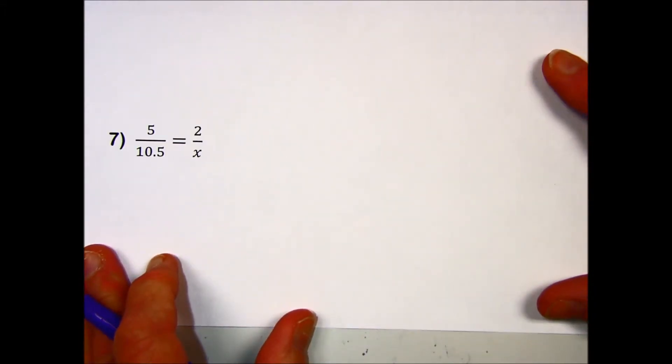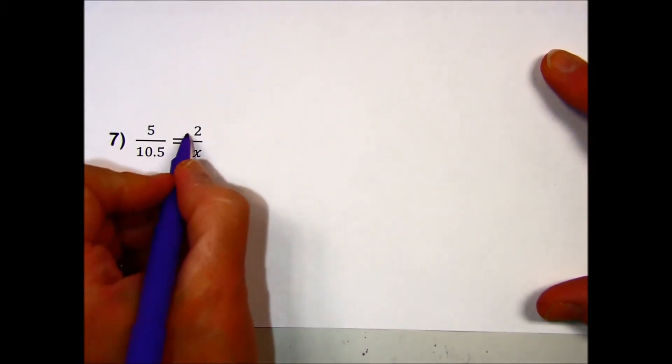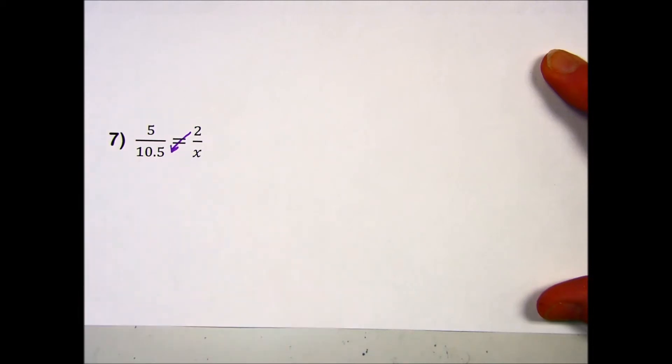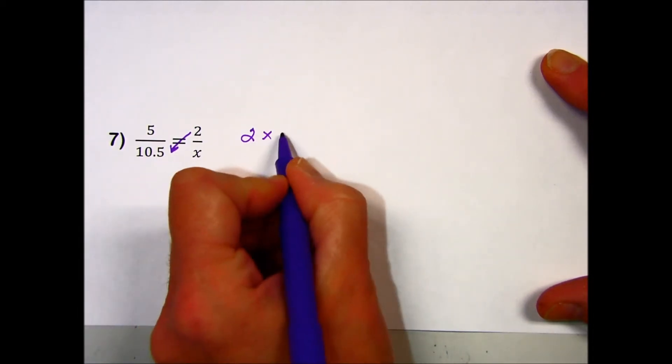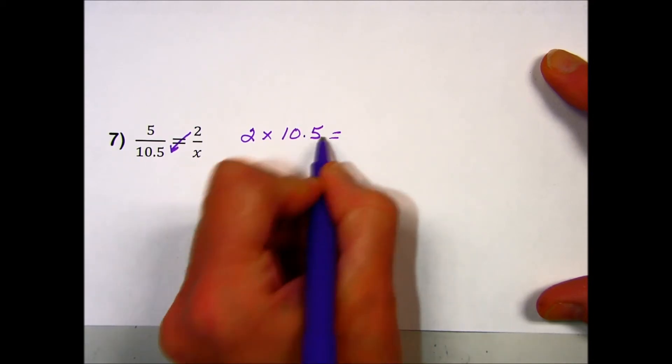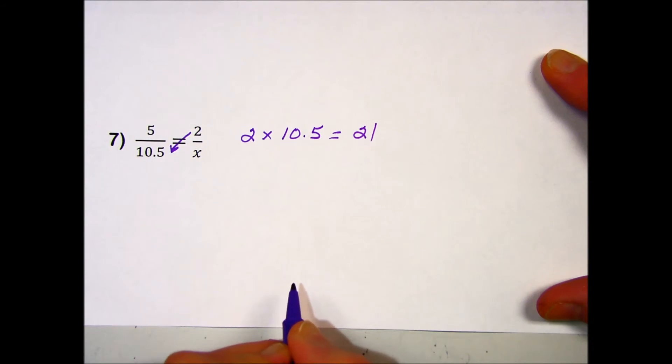Problem number seven: look for the diagonal with the two numbers in it using the cross-multiplication technique. That means we multiply those values. 2 times 10.5 results in a product of 21.